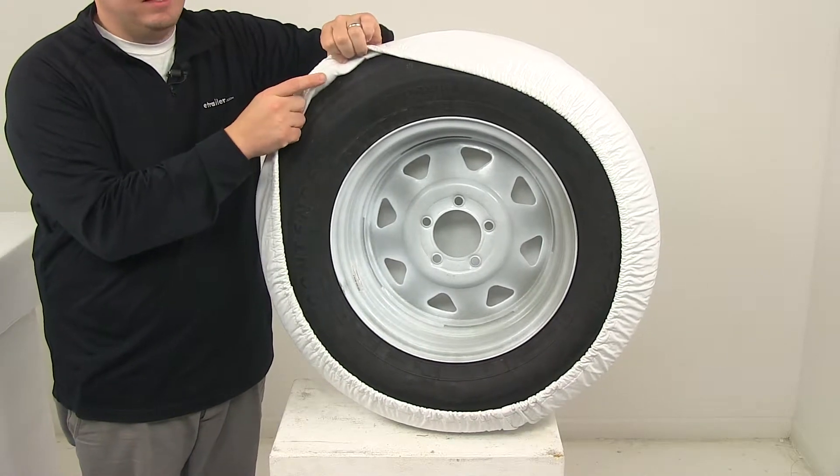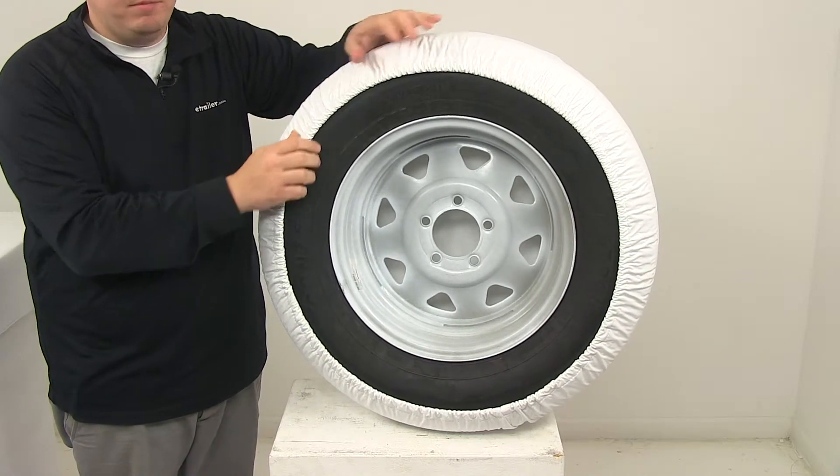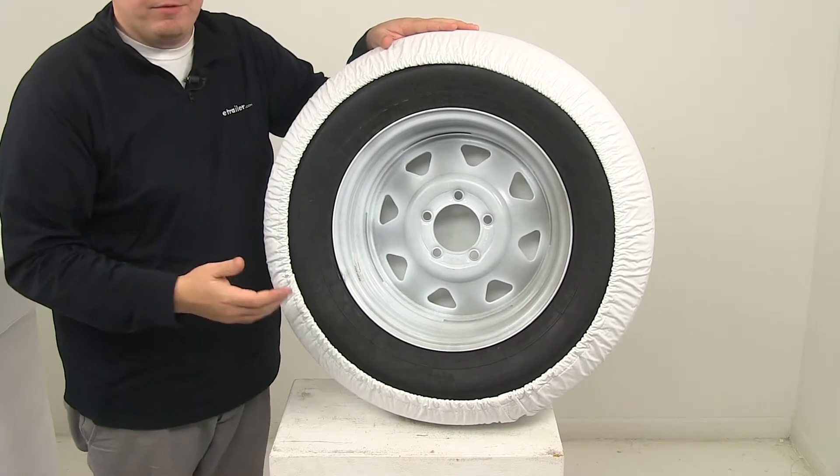On the inside is a soft, non-scratch lining. On the bottom is a slit for water drainage.